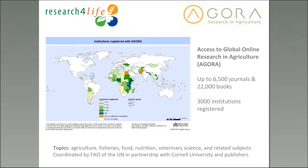We're going to look specifically at Agora, which is coordinated by FAO. It covers not just agriculture, but also fisheries, food, nutrition, veterinary science, social sciences, and economics. The map shows registrations are heavily concentrated in Africa and sub-Saharan Africa, but also in Asia and Latin and South America. Agora has about 6,500 journals, 22,000 books, and around 3,000 registered institutions. The estimated value of the collection available through Agora is about $6 million.